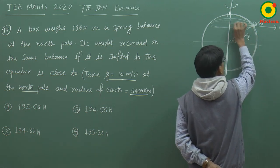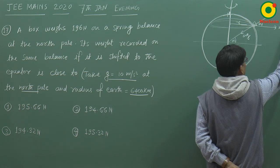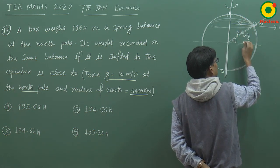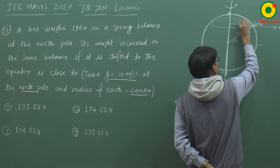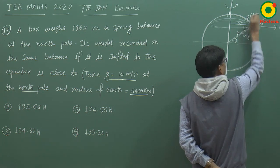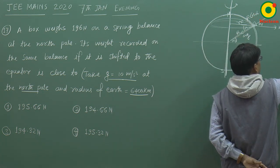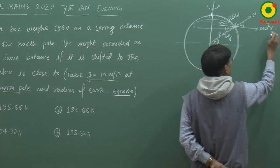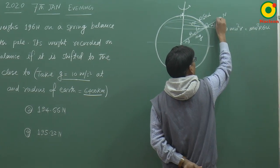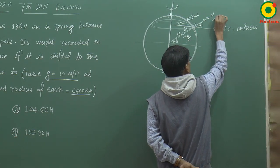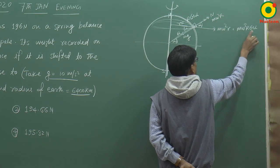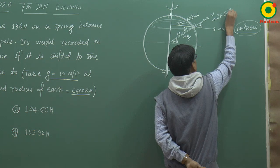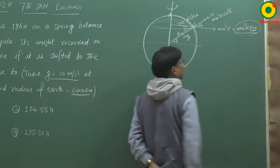mω²r में यह radius होता है small r, और अगर Earth का radius capital R है तो small r = R·cosα। तो centrifugal force हो जाएगा mω²R·cosα। इस centrifugal force का component normal के along निकालेंगे तो mω²R·cos²α आएगा।